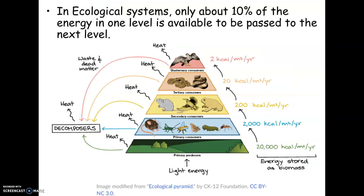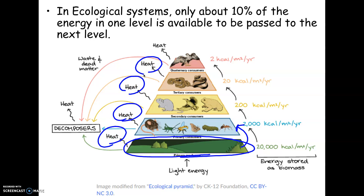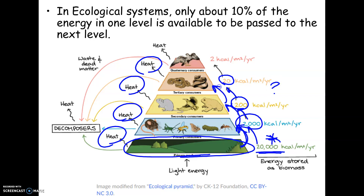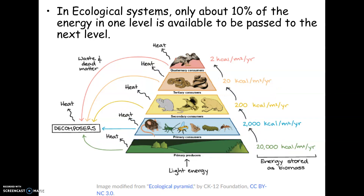This could be an application question on the AP exam. There's a rule in ecology called the 10% rule, which says only about 10% of the energy captured at one level in an ecosystem gets passed to the next level, and the rest is lost as heat. For example, starting with 20,000 kilocalories of energy per square meter per year, only about 2,000 kilocalories gets passed to the next level, then 200, then 20. You could be given a math question like this on your test or the AP exam — you just divide by 10 for each level you go up, because only 10% of the energy is passed on. The other 90% is converted to heat, that unuseful form of energy.